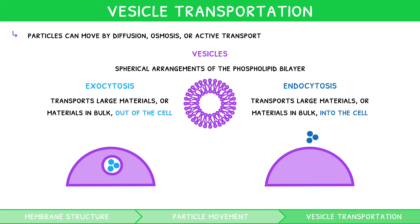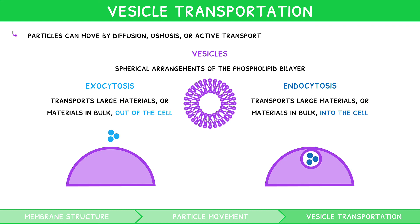But what actually happens during these processes? During exocytosis, the materials to exit the cell are packaged by the Golgi into vesicles, which reach the plasma membrane. Here they fuse with the plasma membrane and the contents are released, and the membrane then flattens afterwards. During endocytosis, the materials to enter the cell come in proximity to the plasma membrane, which is then pinched inwards to form a vesicle. This then moves through the cytoplasm to where the contents are needed.